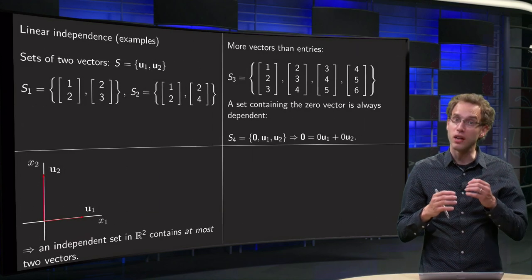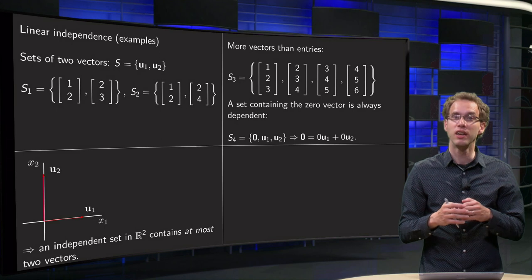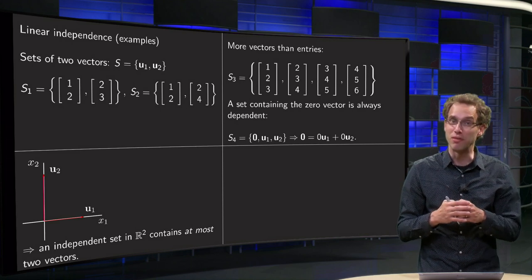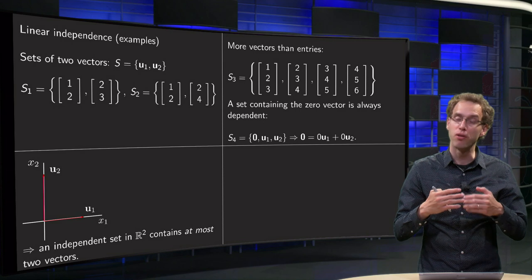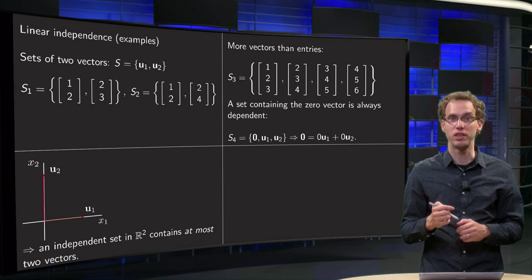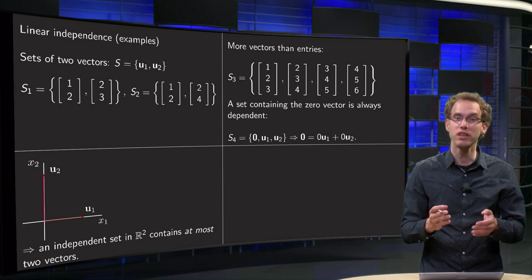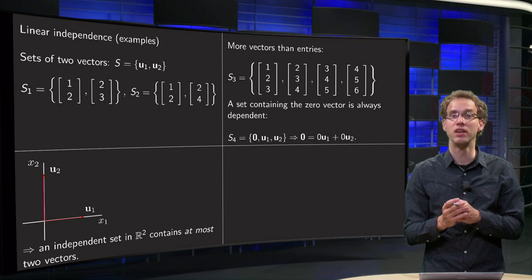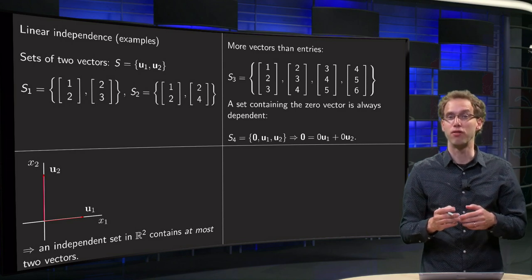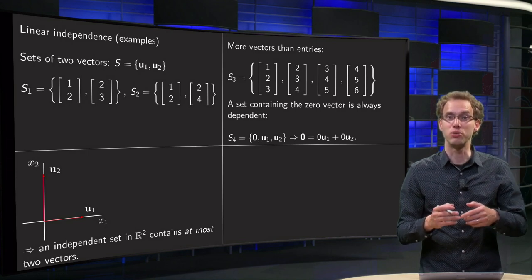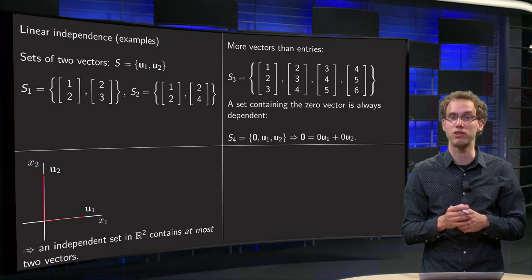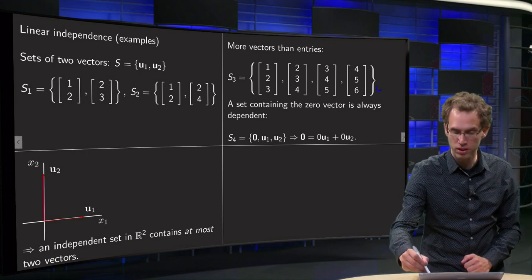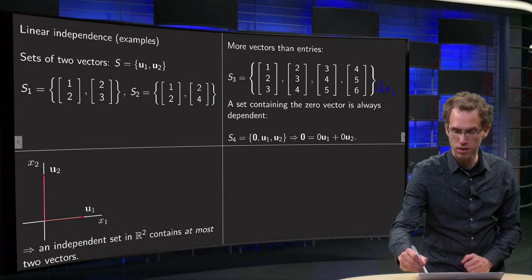You can look at S3: if you have more vectors than you have entries, then you know for sure that your set is dependent. In S3, you have vectors in R³ but you have four vectors. In R³ you can form sets containing at most three independent vectors. We have four here, so this set is dependent.